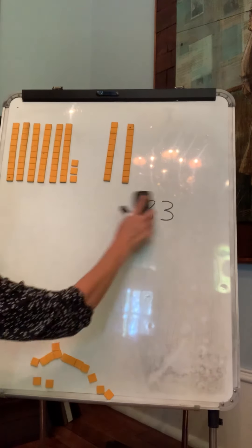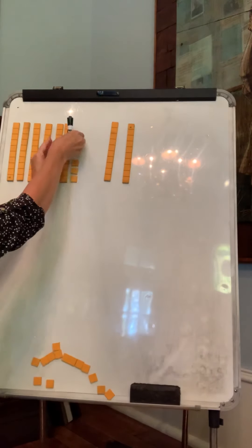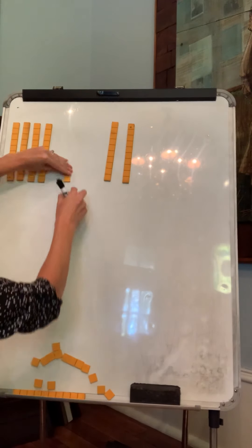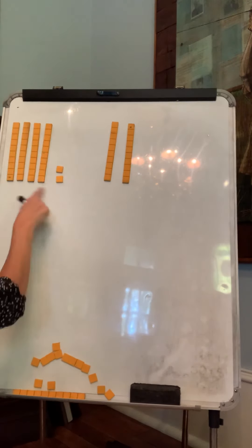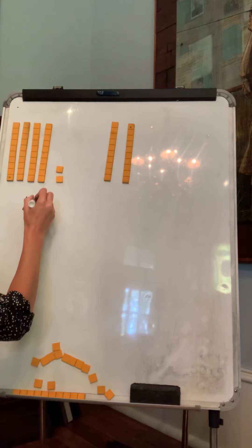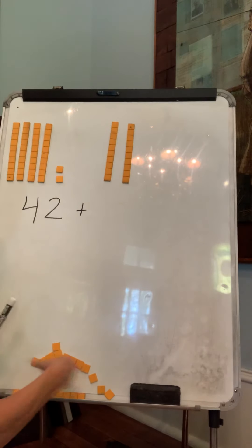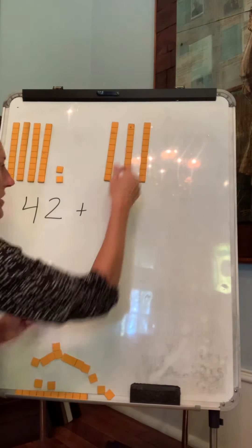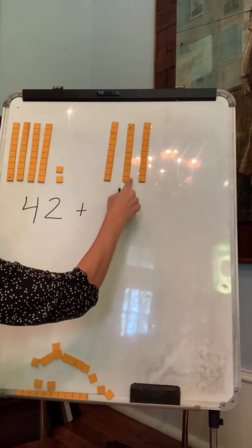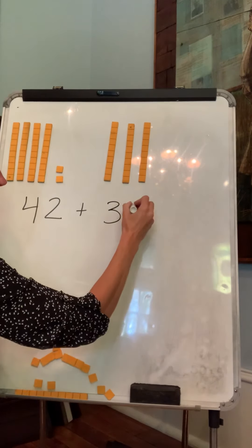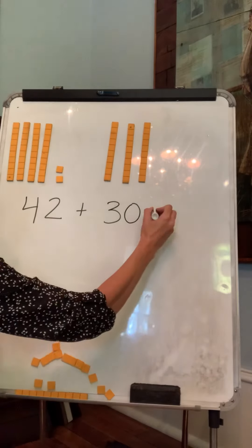What if I have 42. So I have four tens and two ones plus three more tens. That would be 10, 20, 30. Three tens and no ones. So we have to put our zero there. What is that going to equal?